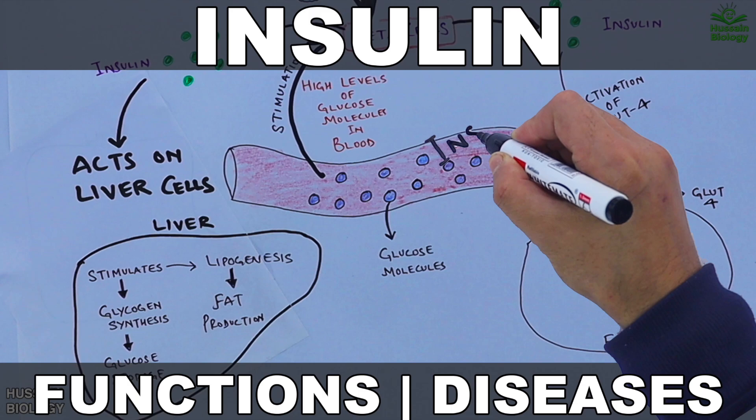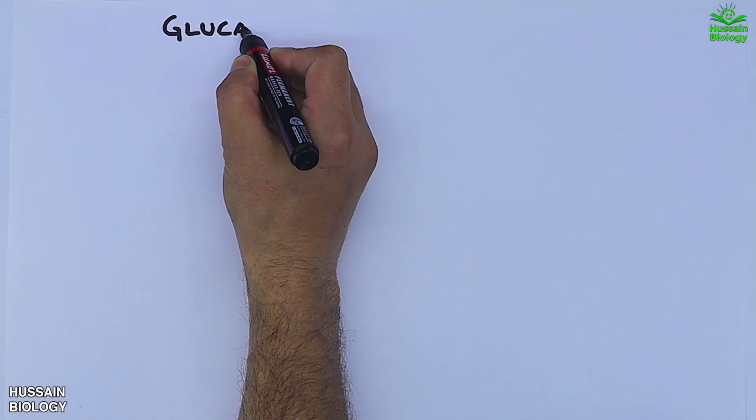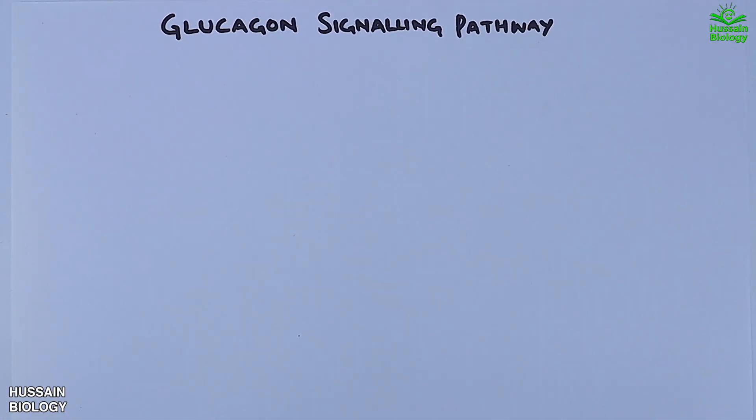In the previous video we discussed insulin. If you want to watch that video first, the link is in the description. Now in this video we are going to discuss the glucagon signaling pathway, a regulatory pathway for glucose metabolism.